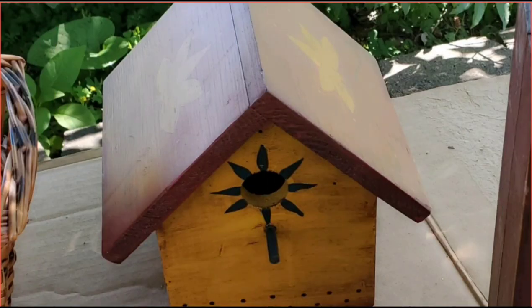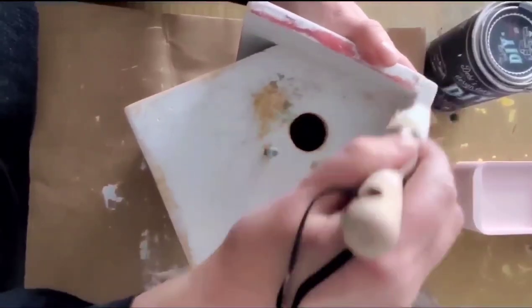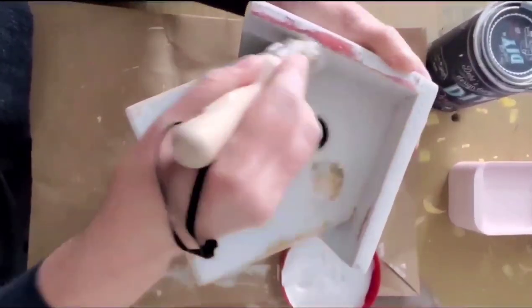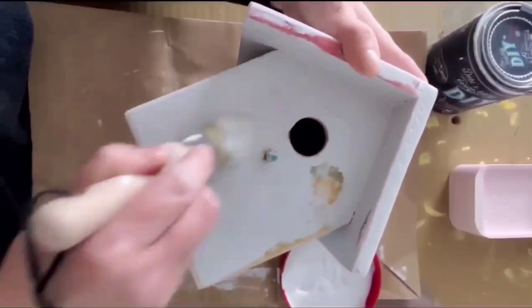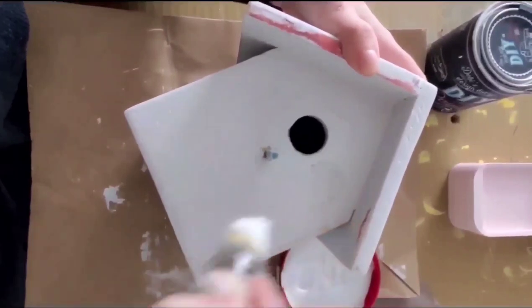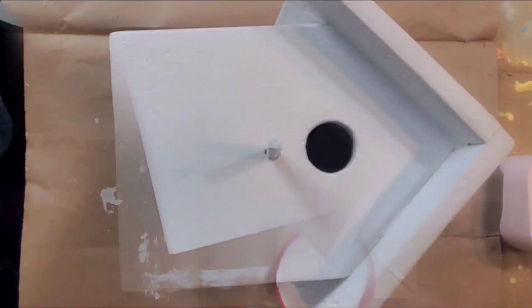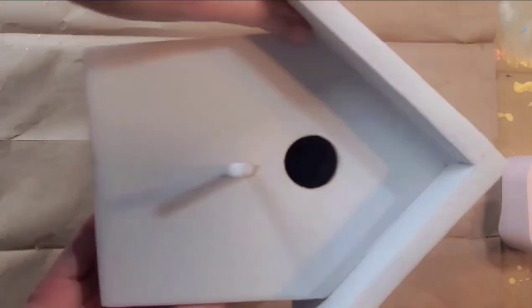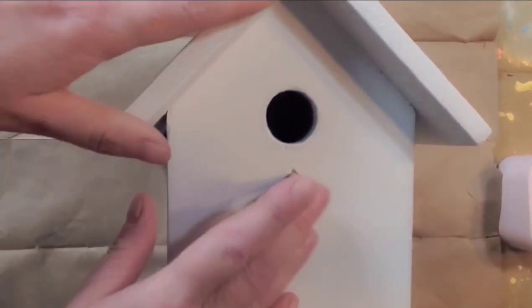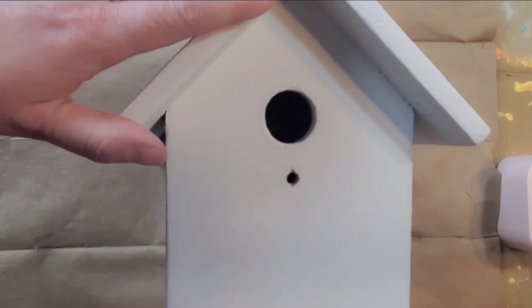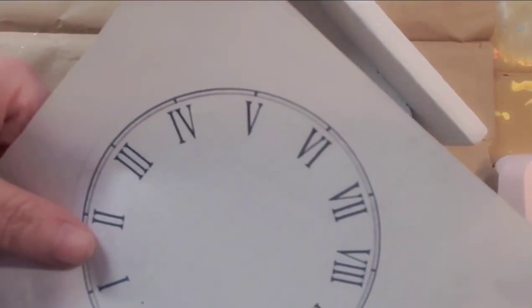Now we're going to update this little birdhouse. After I got the piece clean, it did give me a run for my money as far as sanding. Had a lot of varnish on it and a lot of raised edges, so I think I went back two or three times, but we got it. Now I'm applying two coats of the DIY Paint in Vintage Linen. Amazing coverage on only two coats. I'm going to remove the perch because I'm going to use something else.